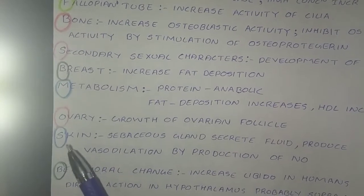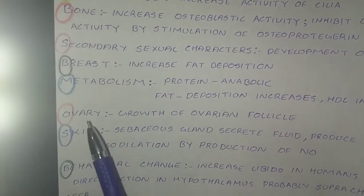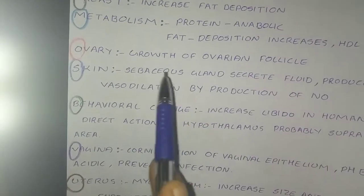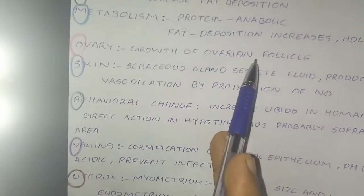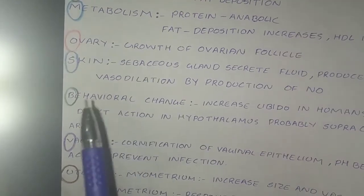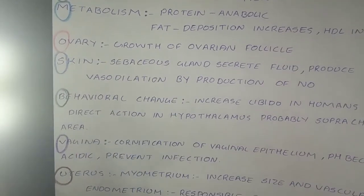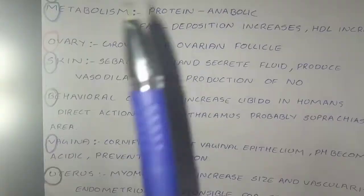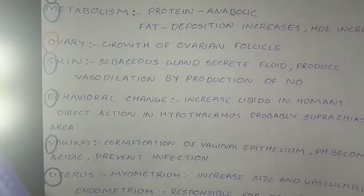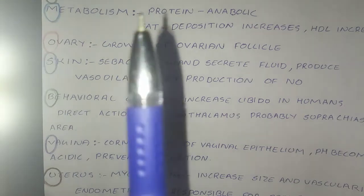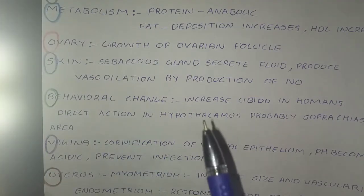O stands for ovary. Estrogen causes the growth of ovarian follicles, as already mentioned in the ovarian cycle covered in my previous video — the link is in the description.